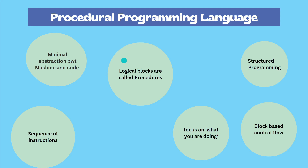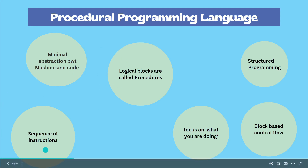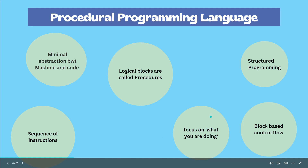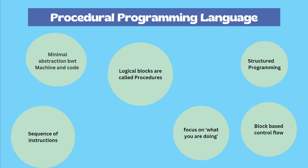Now let's look into the key features of procedural programming language. It has a sequence of instructions used to communicate with the computer, making it a structured programming language. These instructions are written in logical code blocks called procedures. It focuses on what to do instead of how to do it — for example, it focuses on what implementation we are trying to do rather than how we implement it. It also follows deep block-based control flow and has minimal abstraction between the machine and code.